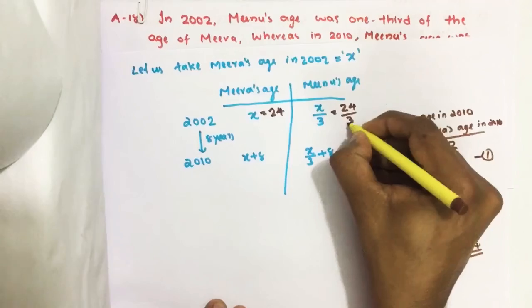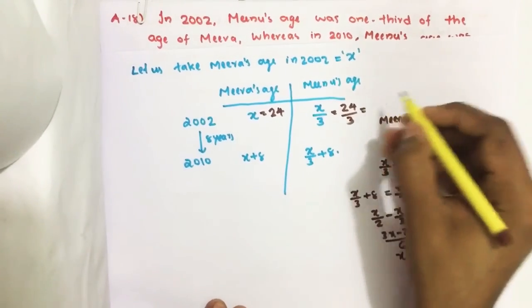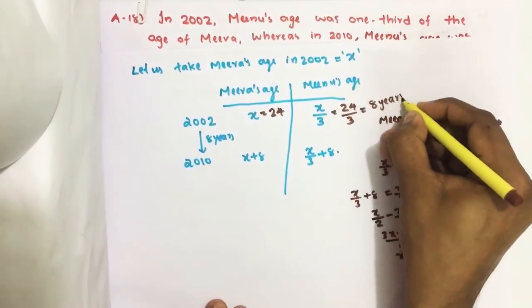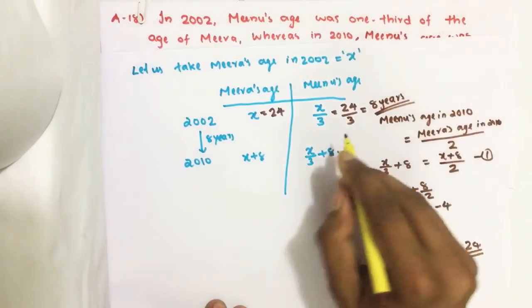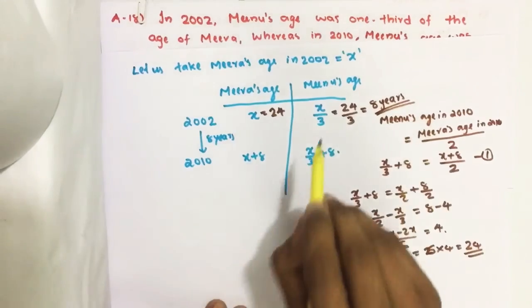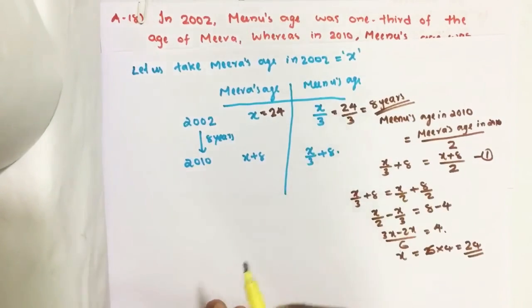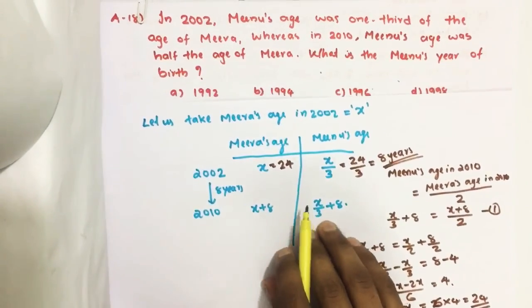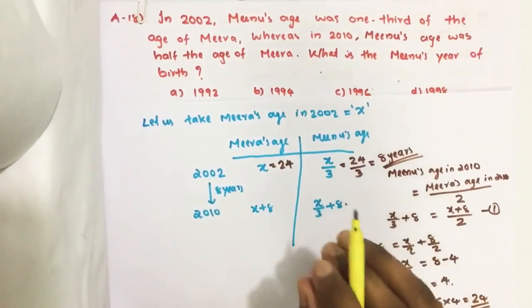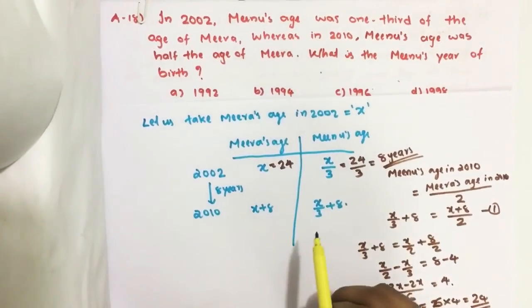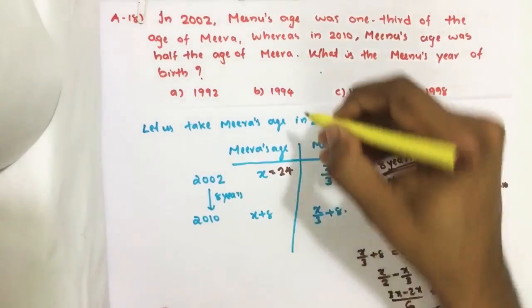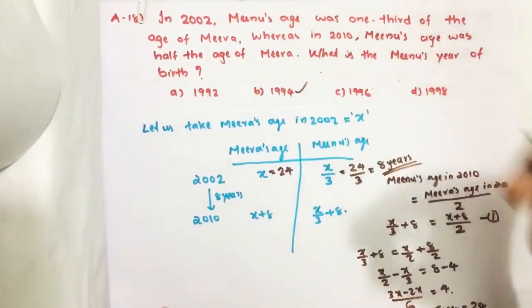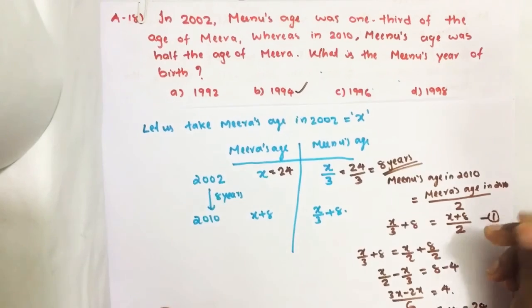Which equals 8 years. So 8 years before 2002 was the birth date of Minoo. So we get 2002 minus 8, we get 1994 as the answer.